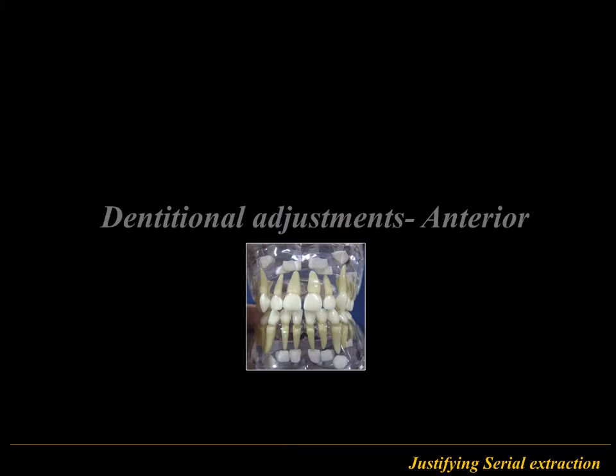Since serial extraction is a crude procedure where you are extracting a number of teeth quite early in the patient's life, it can be traumatic. It is a long procedure involving extraction of multiple deciduous and permanent teeth, so we need to justify it before proceeding. Ideally there are natural dentitional adjustments that take place in both the anteriors and posteriors. If these adjustments are not satisfactory, we anticipate malocclusion and proceed with serial extraction.